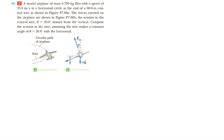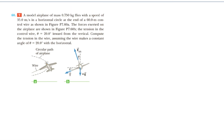First, we should list off our given values. We know the mass of the plane equals 0.75 kilograms, the tangential velocity of the plane equals 35 meters per second, the rope length equals 60 meters, and theta, as shown in these diagrams, equals 20 degrees.